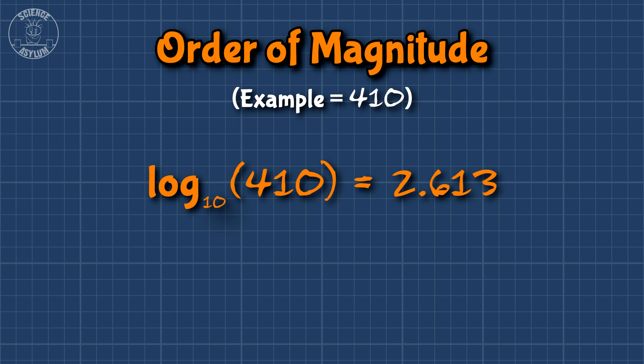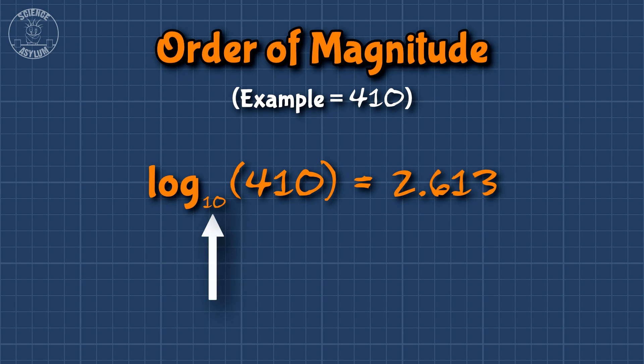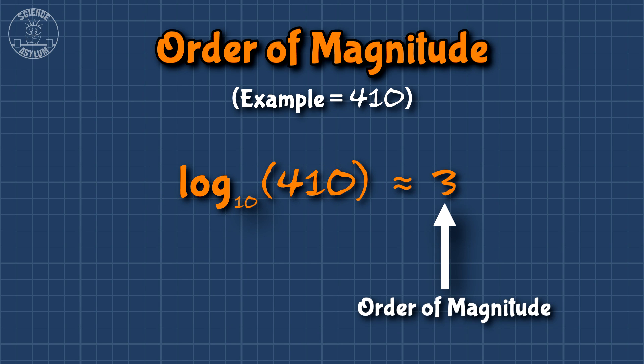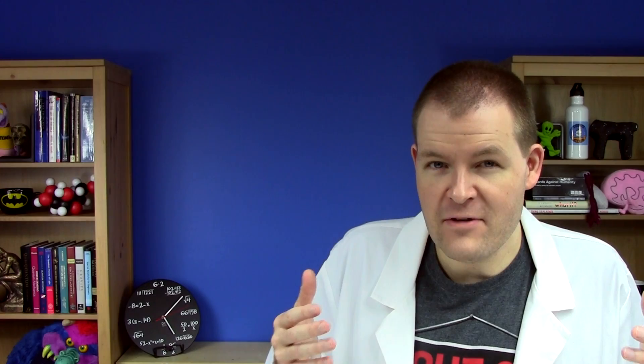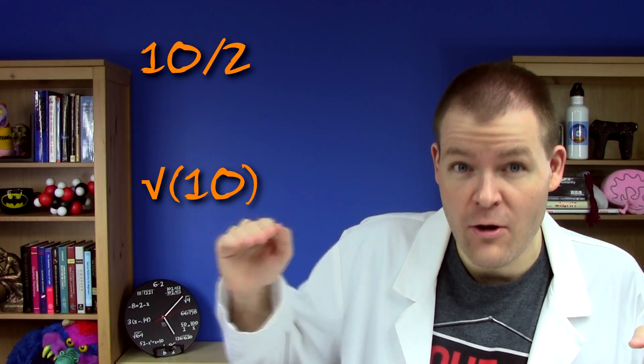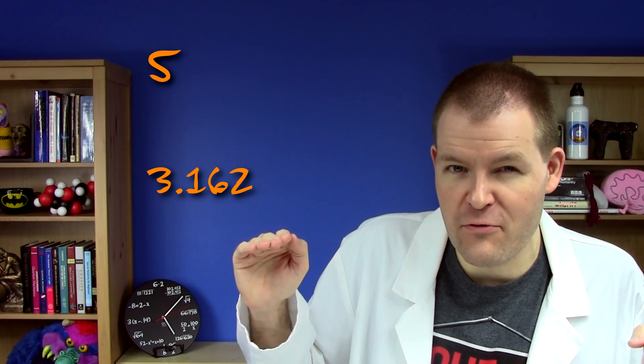Now prepare yourselves for the next bit. We're going to use something you probably thought you'd never see again: logs — logarithms. Open your mind. To find an order of magnitude, you first take the common log of that number — that's the log base 10, because we're looking for powers of 10. Then you round the result like normal. But this makes orders of magnitude a little weird. Rounding like this moves the halfway marker from half of 10 down to root 10, or from 5 down to a little over 3, which skews toward rounding up.